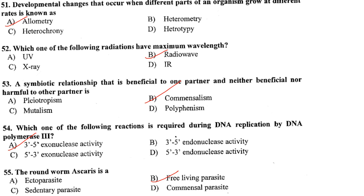Which radiation has the maximum wavelength? Radio waves have the maximum wavelength. Answer is option B. A symbiotic relationship beneficial to one partner and neither beneficial nor harmful to the other is called commensalism. Mutualism is symbiosis where both partners benefit. Pleiotropy is the condition where a single gene controls more than one unrelated phenotypic effect. Polyphenism is the phenomenon where two or more distinct phenotypes are produced by the same genotype.